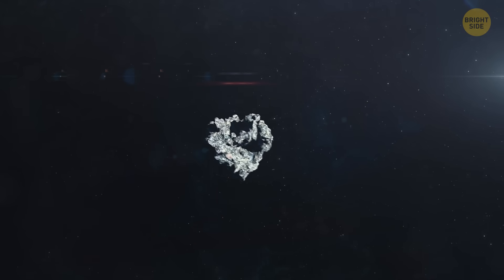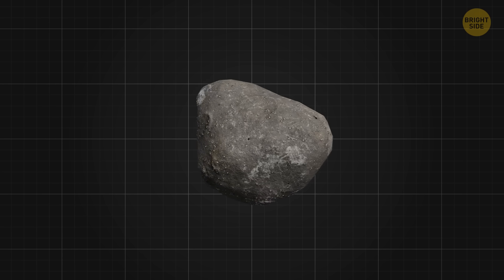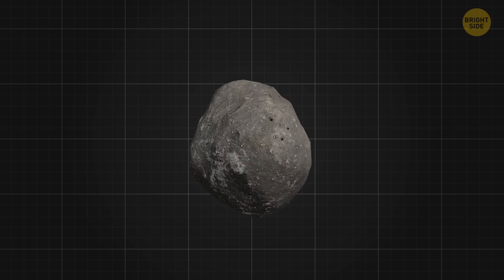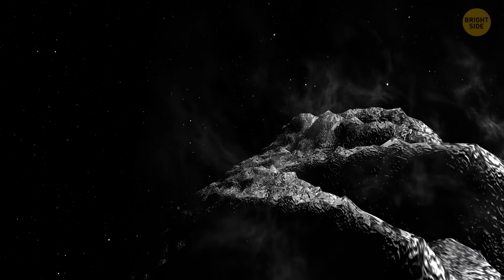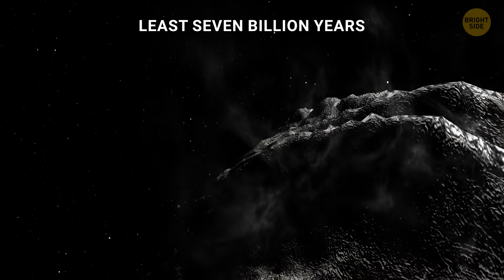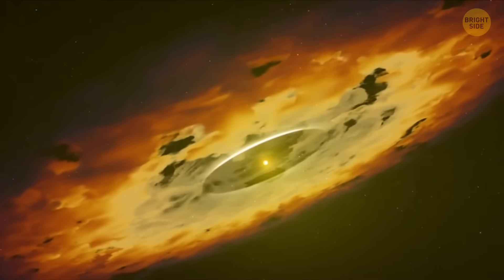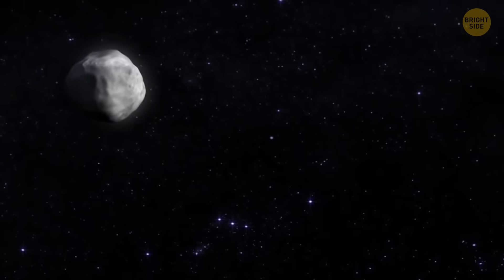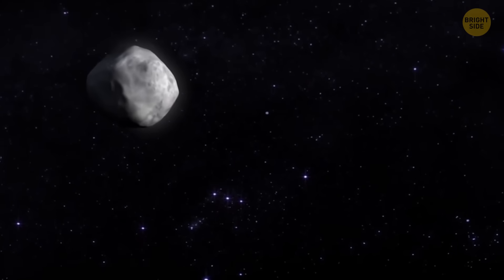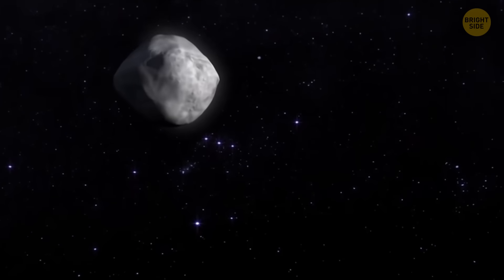3i Atlas is still a total weirdo, in the best way. And it stands out for a bunch of reasons. Let's look at three of the most important ones. First, this object is old. Like, really old. Older than me. Scientists think it's been traveling through space for at least 7 billion years. That's so far back in time that it was formed before our Sun and Earth even existed. So yeah, it's probably the most ancient thing we've ever seen in our cosmic neighborhood.